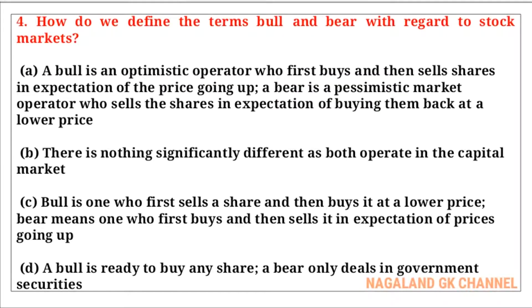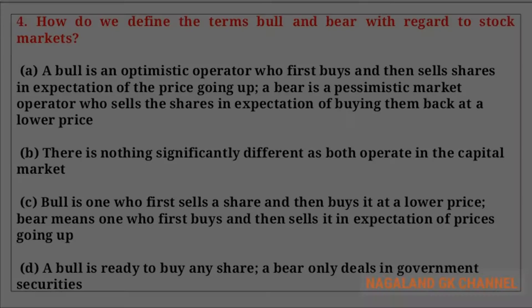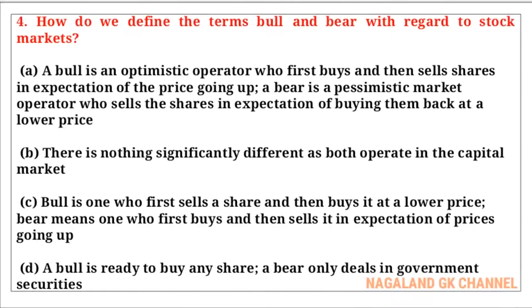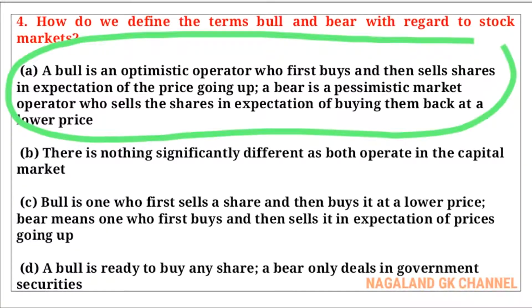Question number four: How do we define the terms 'bull' and 'bear' with regard to stock markets? The correct answer is option number A — a bull is an optimistic operator who first buys and then sells shares in expectation of the price going up; a bear is a pessimistic market operator who sells shares in expectation of buying them back at a lower price.